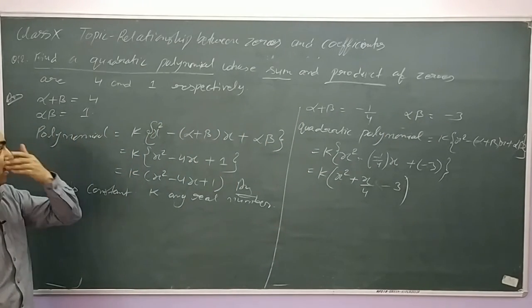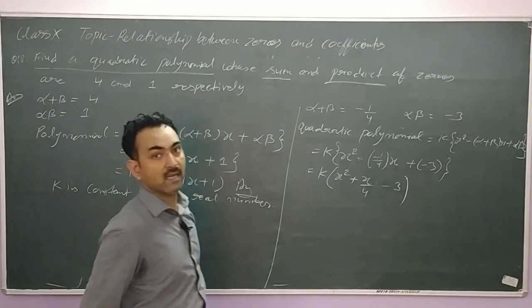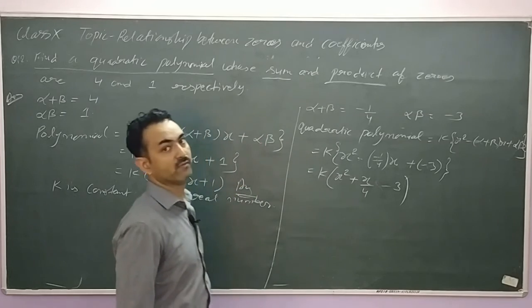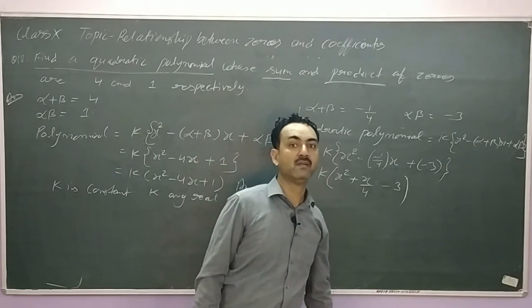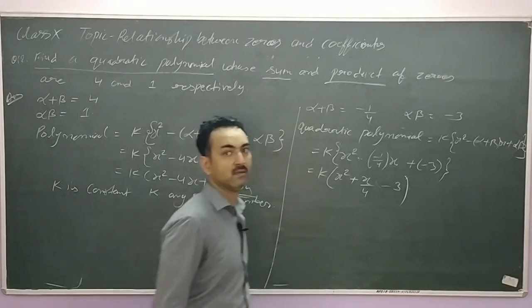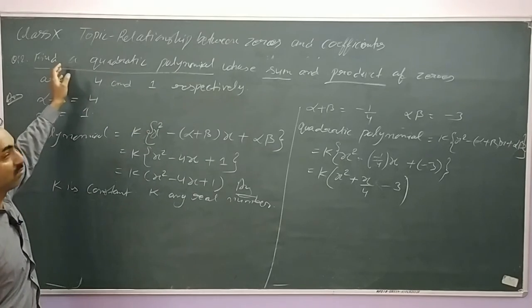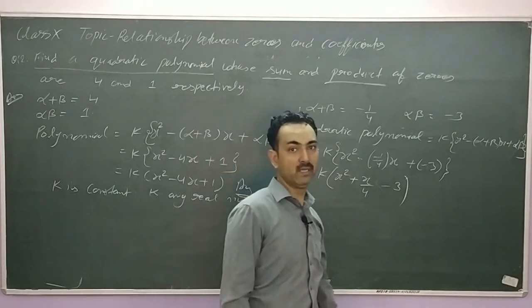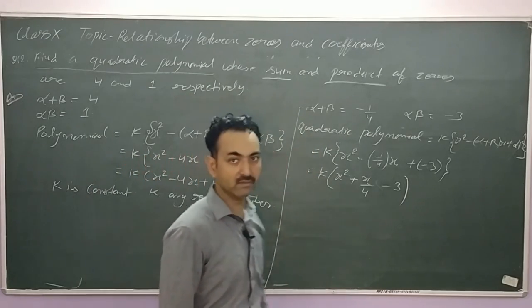So today we have discussed and learned: first, finding the zeros of a quadratic polynomial and verifying the relationship between its two roots alpha and beta; and second, how to find a quadratic polynomial when the sum of zeros and product of zeros are given.